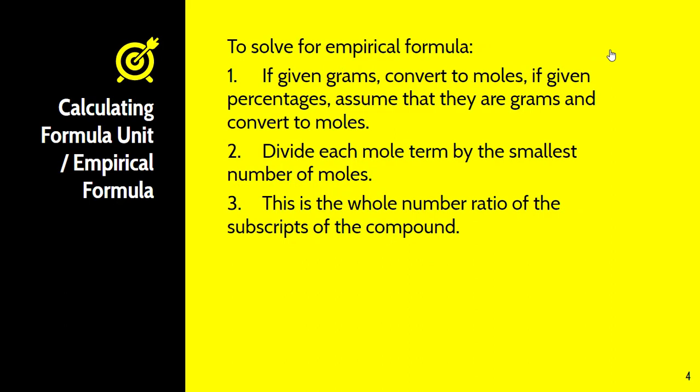Just a quick reminder on how to solve for the empirical formula. If you're given grams, convert to moles. If given percentages, assume they are grams and then convert to moles — so if it tells you 55% oxygen and 45% carbon, just change those percentages to grams and convert to moles. When you have all your mole numbers, divide by the smallest mole number. This whole number ratio gives you the subscripts in the compound — that's your empirical formula.